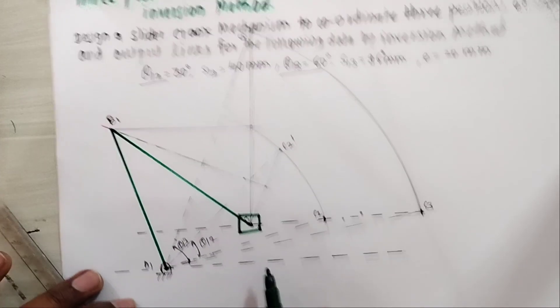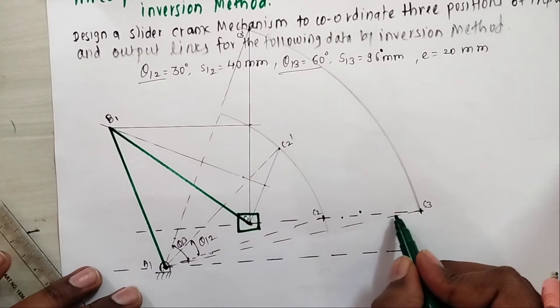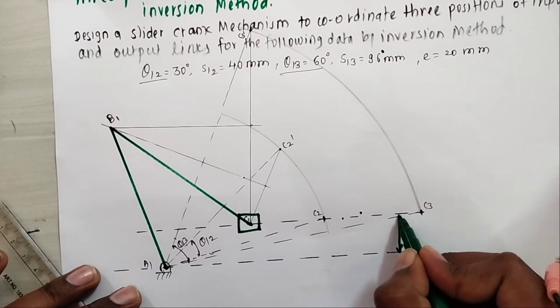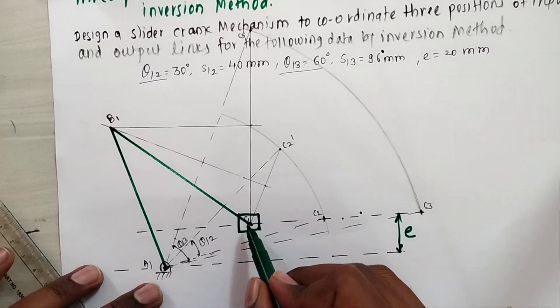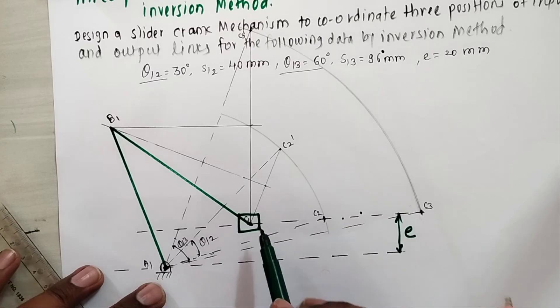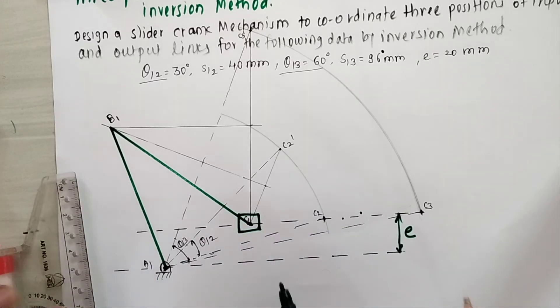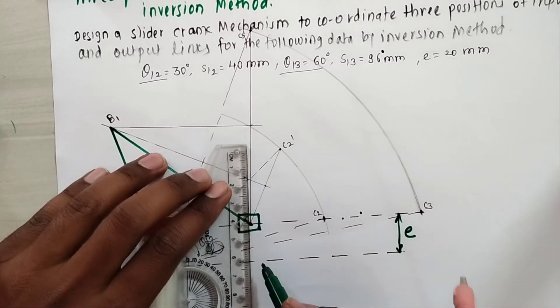I repeat what we did. First draw these two lines at distance equal to eccentricity E apart. Mark A1 and C1 approximately. Once you get A1C1, then from C1 to C2 take distance.